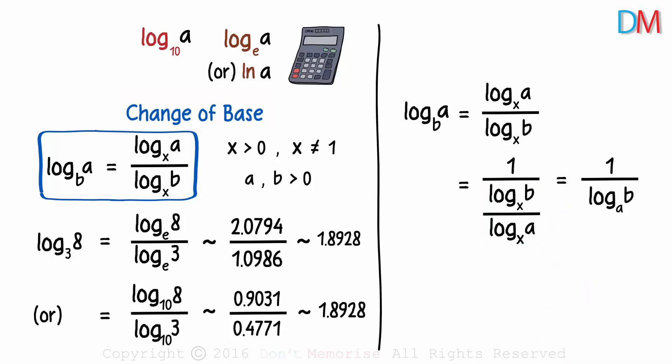We get log of A to the base B equal to 1 over log B to the base A. And multiplying both sides with log of B to the base A will result in this: Log of A to the base B multiplied by log of B to the base A will equal 1.